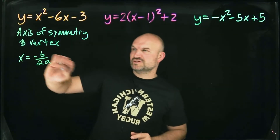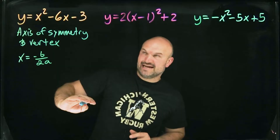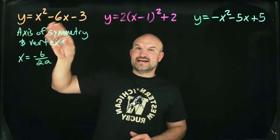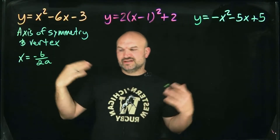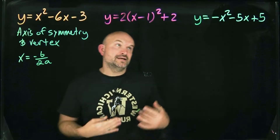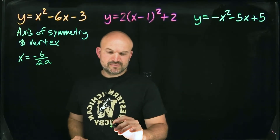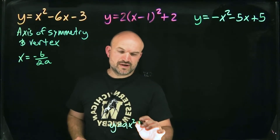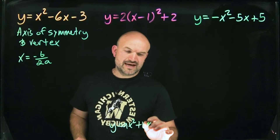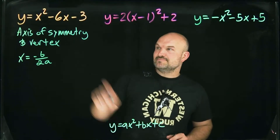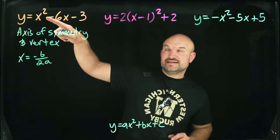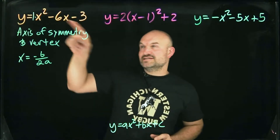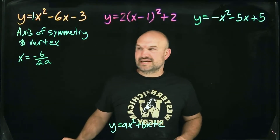In this equation, a and b are the coefficients of the quadratic and linear terms. A quadratic equation can be written in the form y equals ax squared plus bx plus c. In this case, a equals one and b equals negative six.